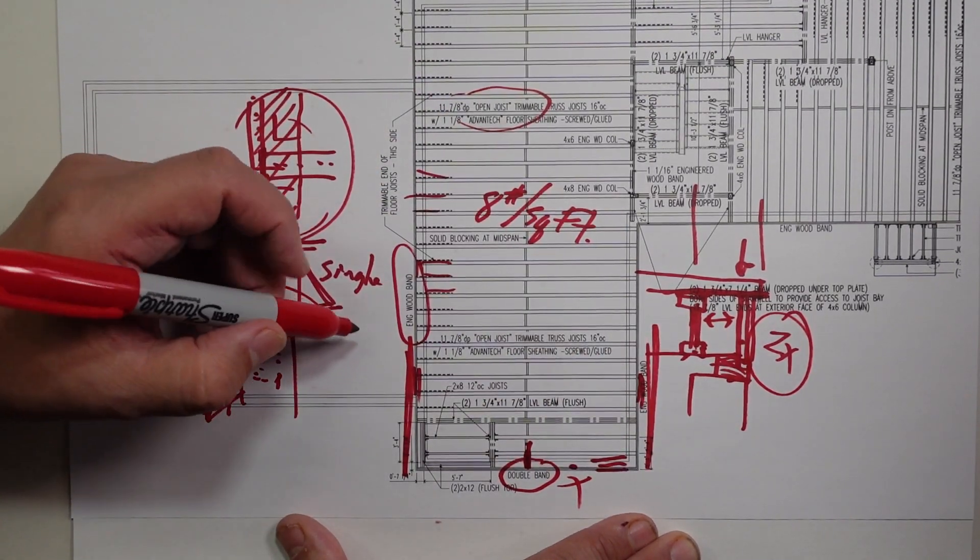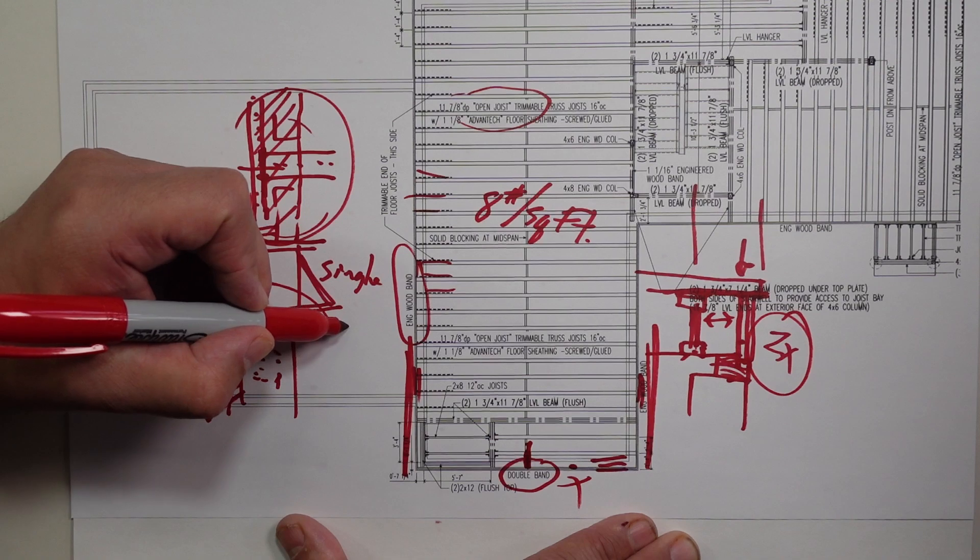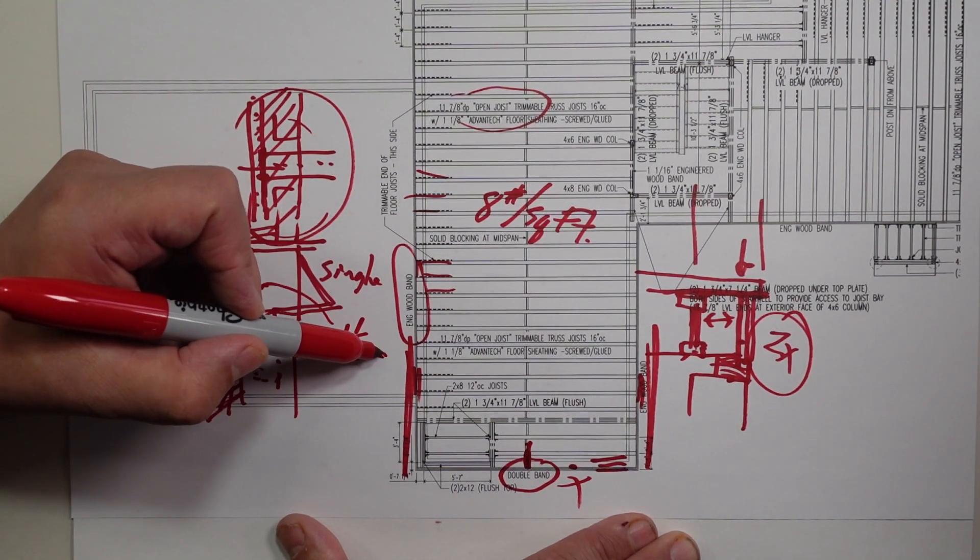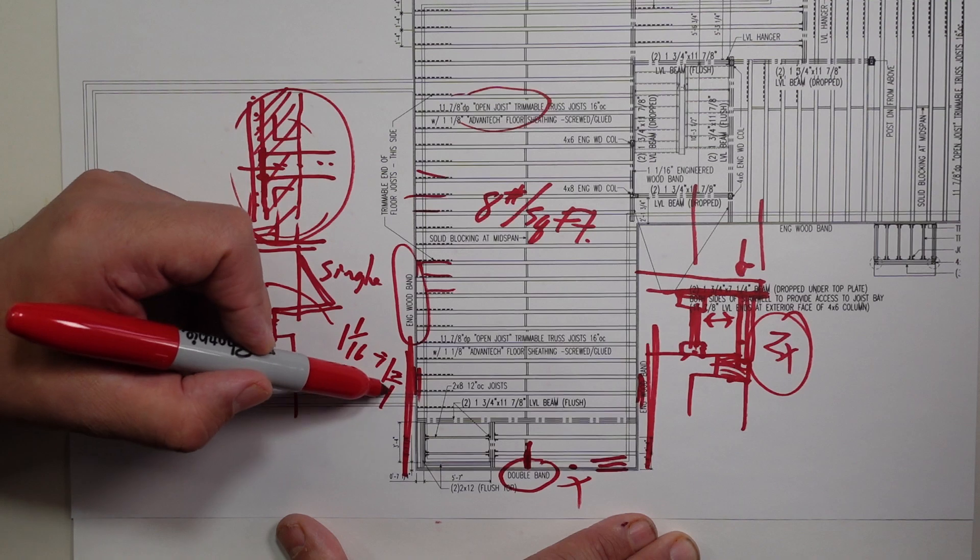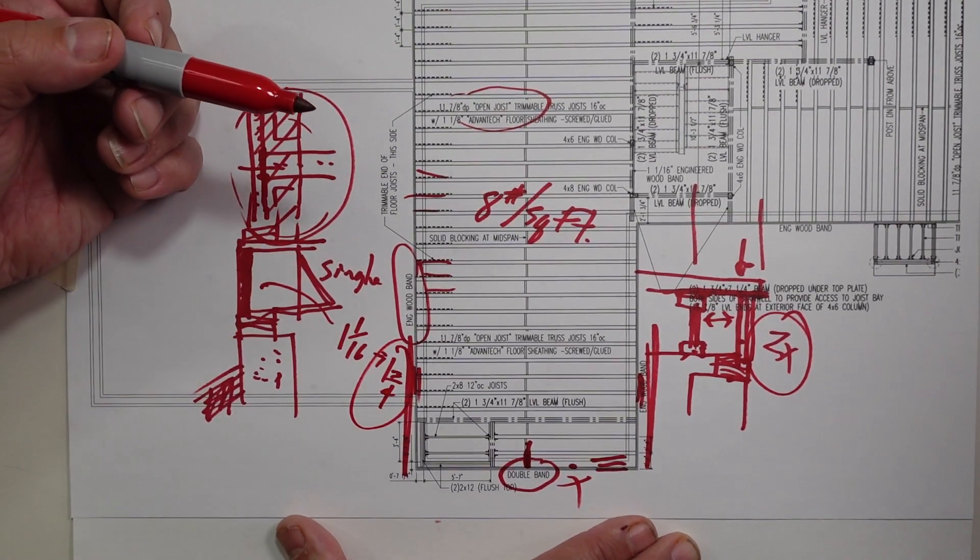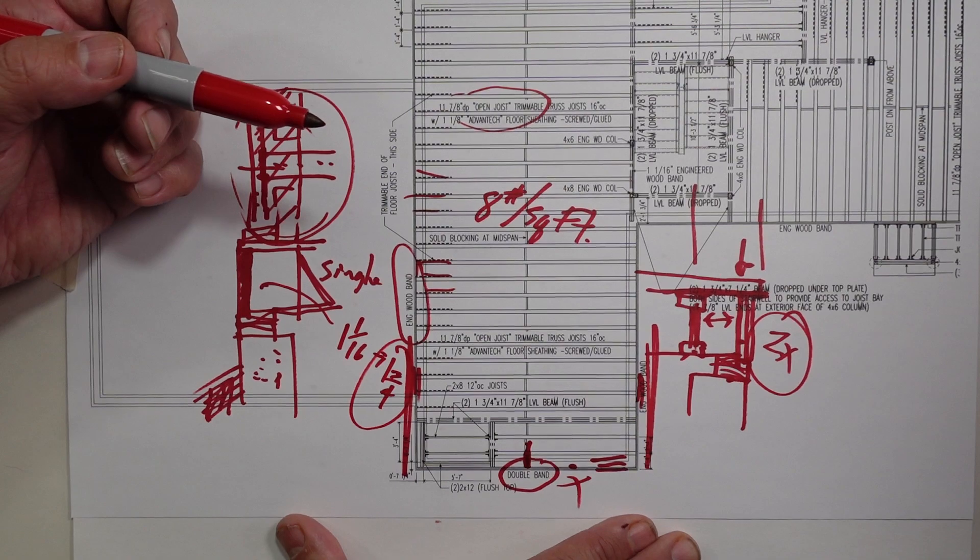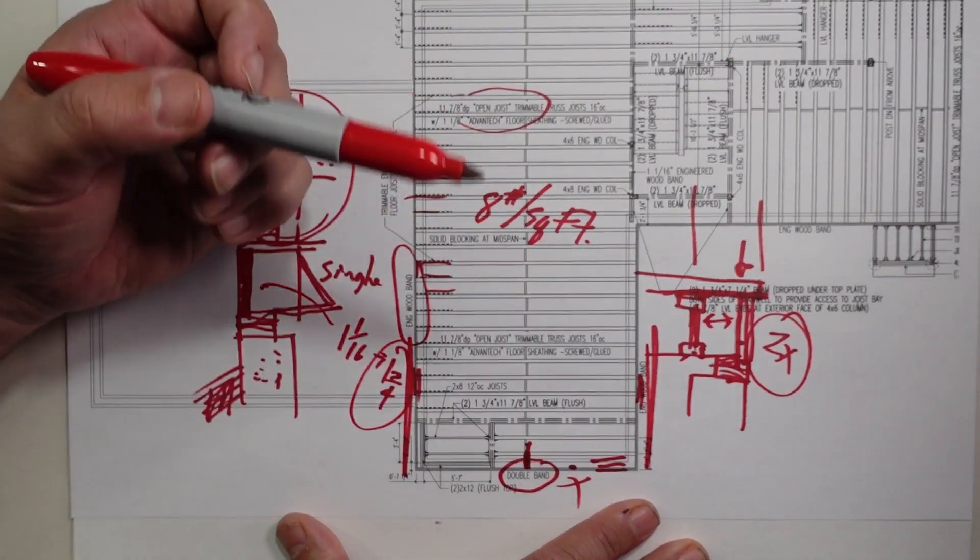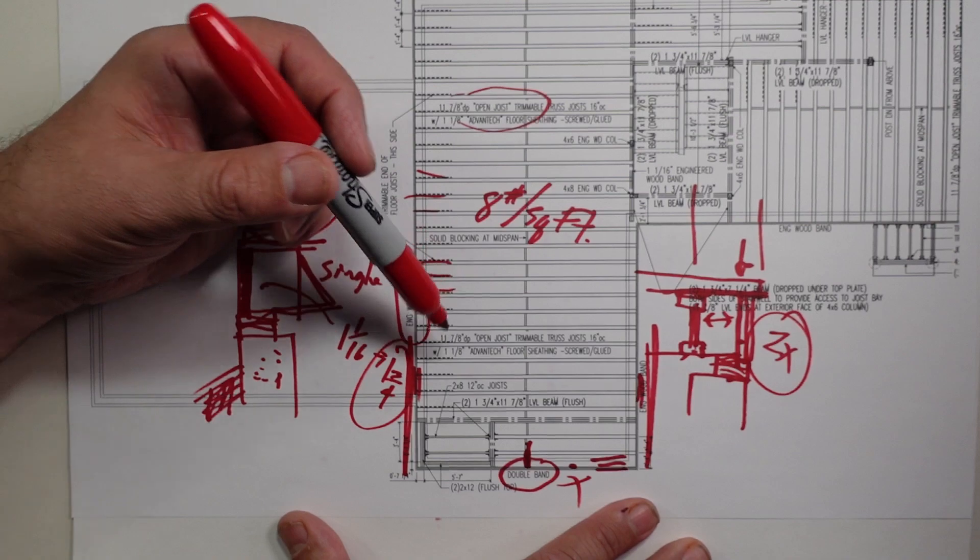These band joists, they typically run anywhere from, I think it's about an inch and a 60 to, you know, an inch and three quarters, depending on if you're using their band product, or in a lot of cases, we just jump up and use an LVL there. Now, one of the other things I wanted to point out, while we were down in this corner, and you saw it out at the job site,